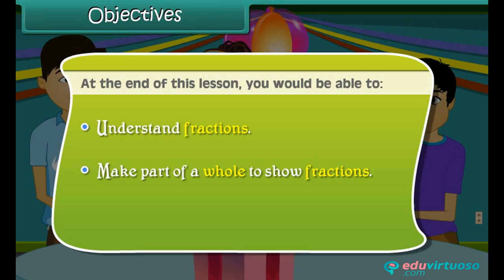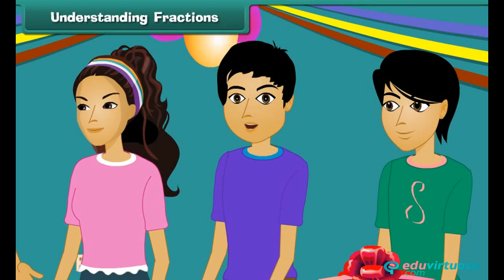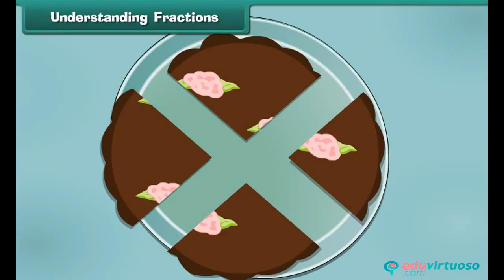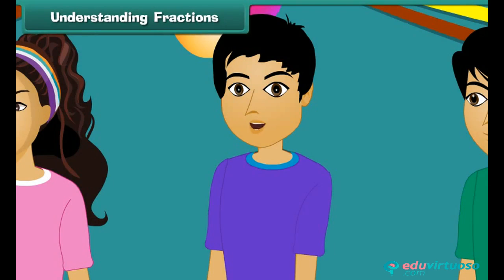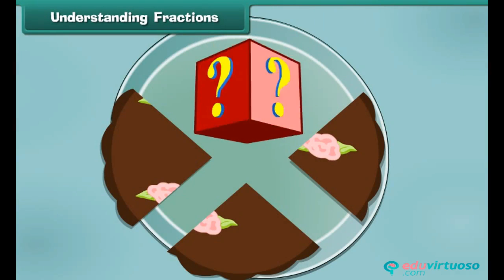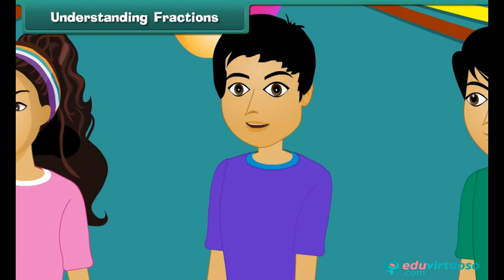We had four pieces of a cake and I ate one out of four. If I eat one piece of cake, how can we count it? We will use fractions for such type of counting. A fraction is a part of a whole. My eating of cake can be counted as one by four piece.